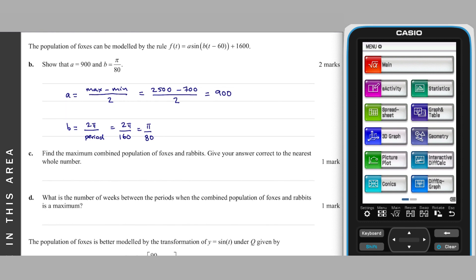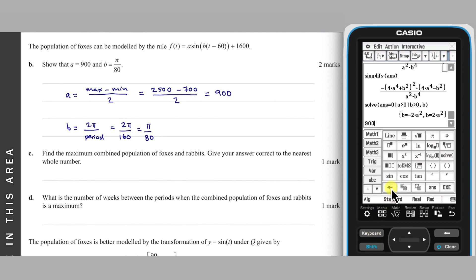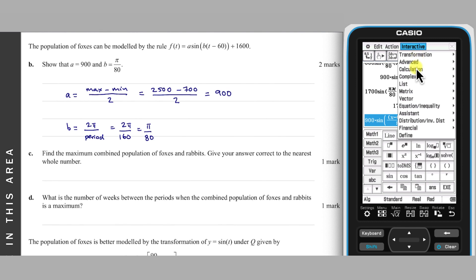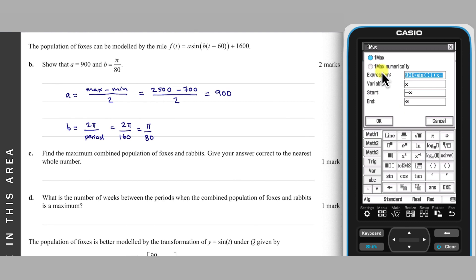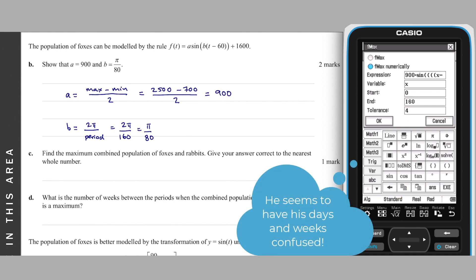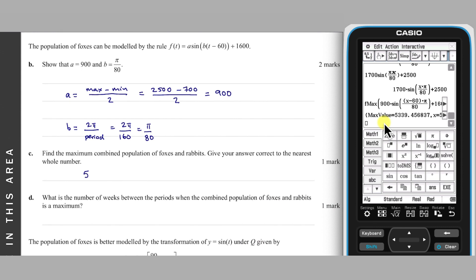Part C: To find the maximum combined population of these animals, use the f max command in ClassPad's main app. First I'll enter the two functions and then sum them. Now I'm going to apply the f max command to the sum of these functions by interactive calculation. As I only require an answer to the nearest whole number, I'll make this calculation a numeric one. As the two single populations have a period of 160 days, the combined population will have the same period, so I will look for the maximum value between 0 and 160 days. This value written to the nearest whole animal is 5339.